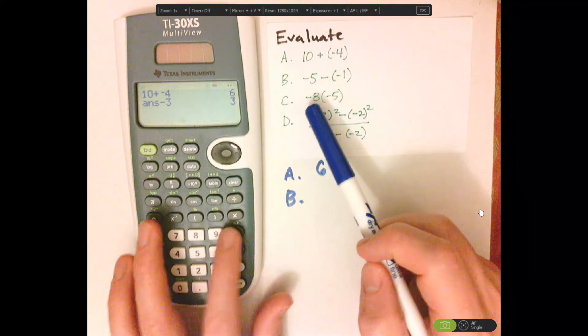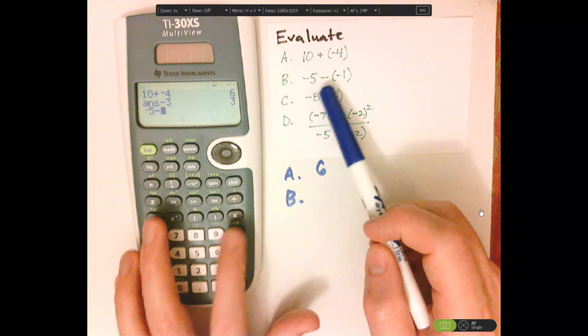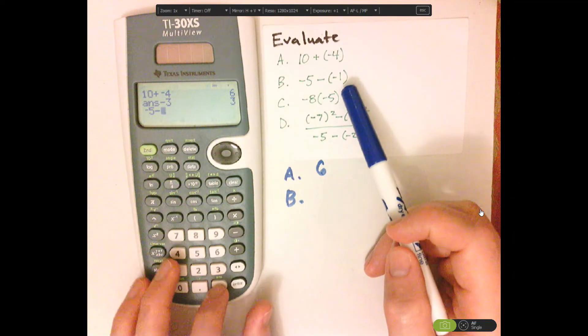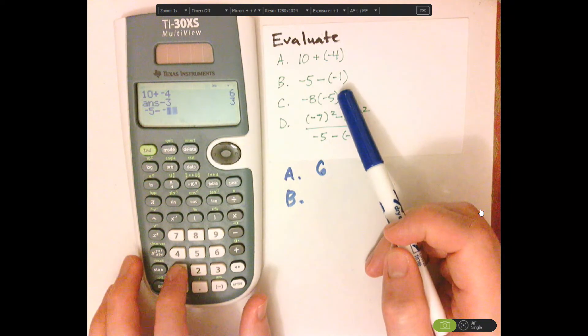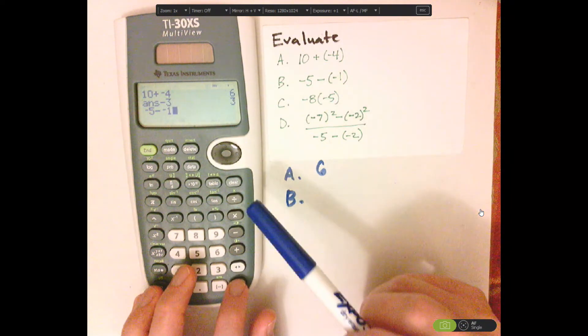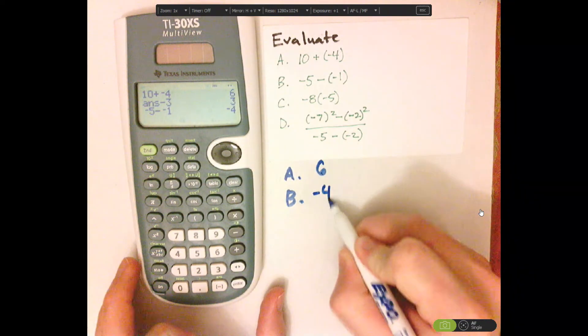So you would do negative 5 minus, and I don't need the parentheses here, so it would be negative 1 like that, and then enter. So B is negative 4.